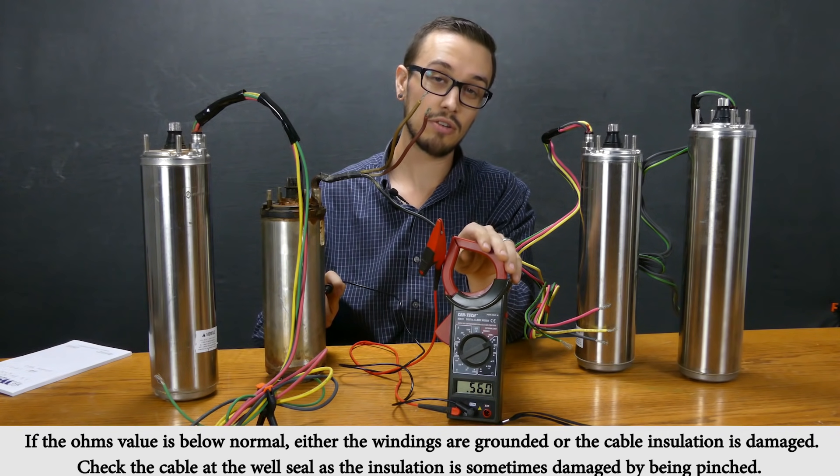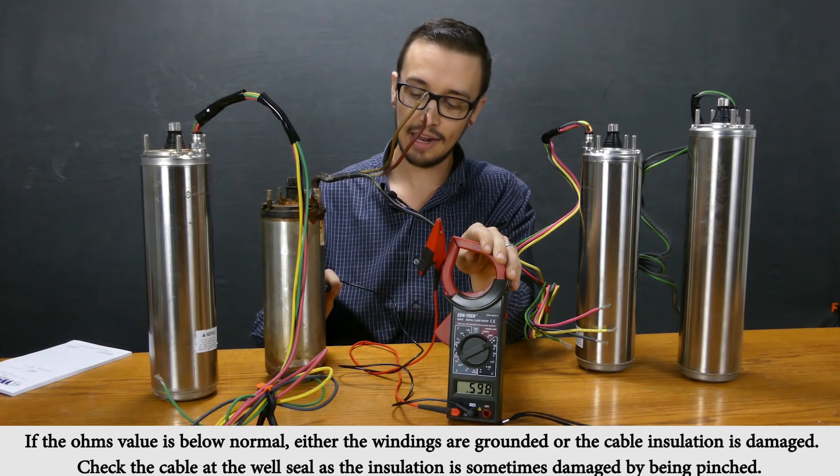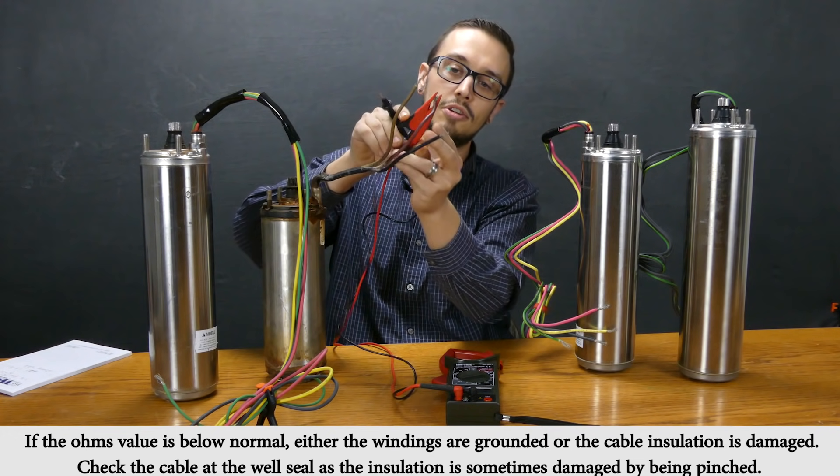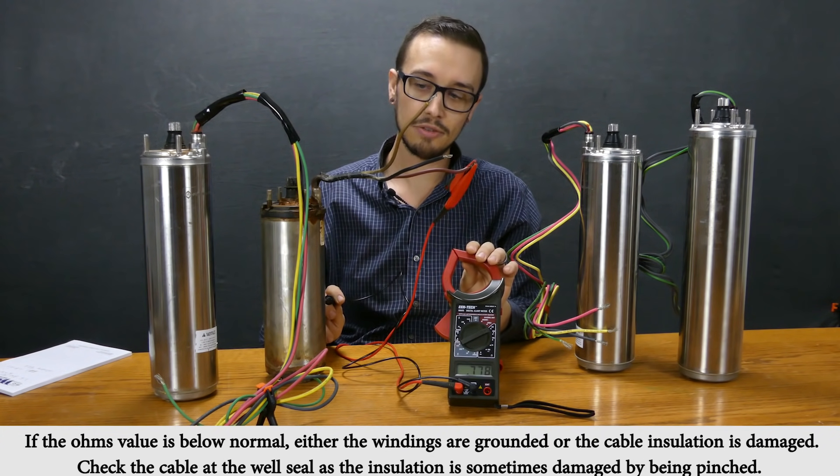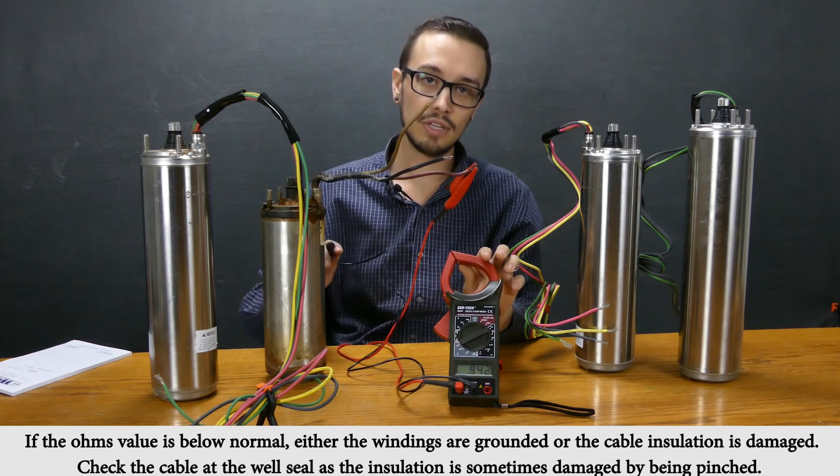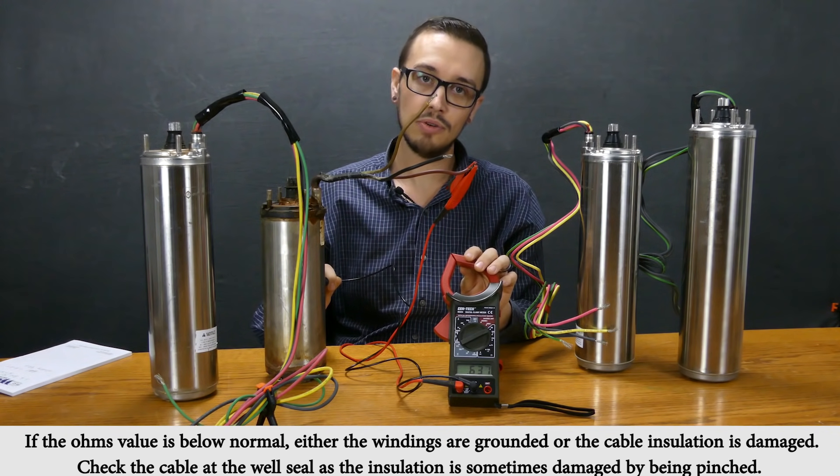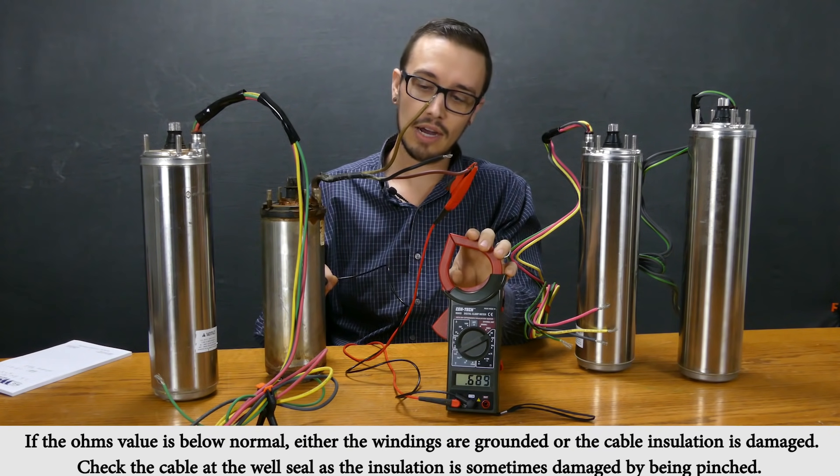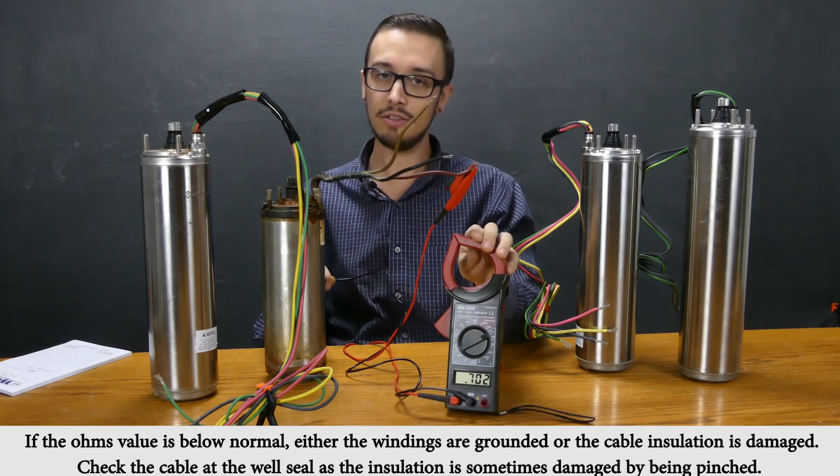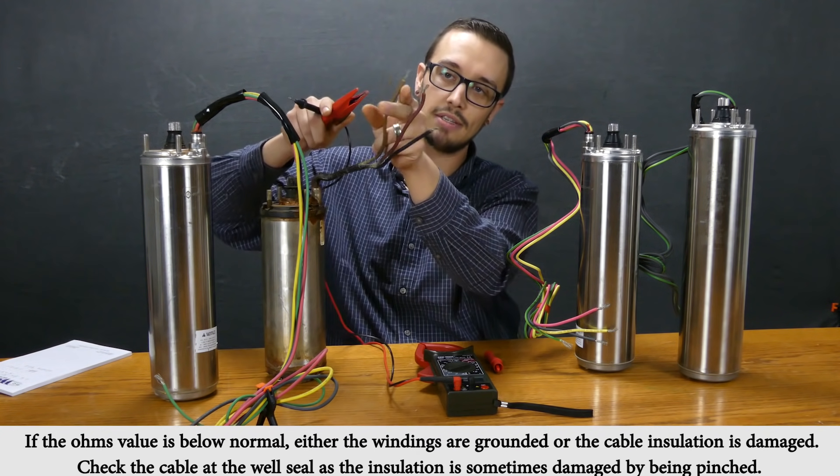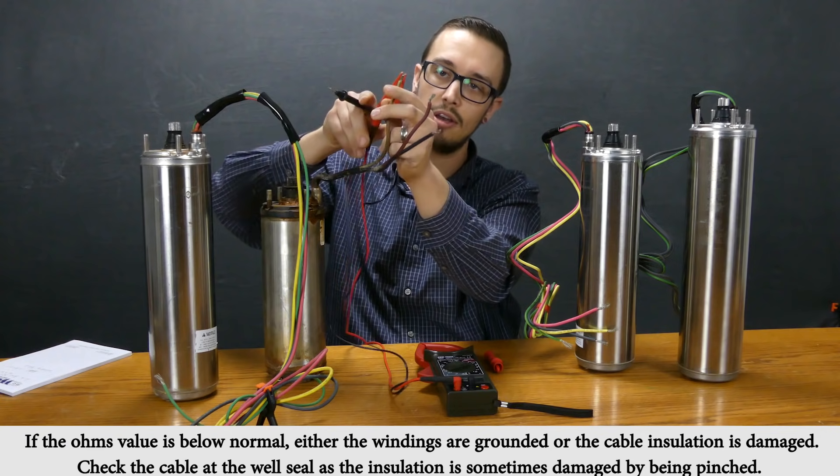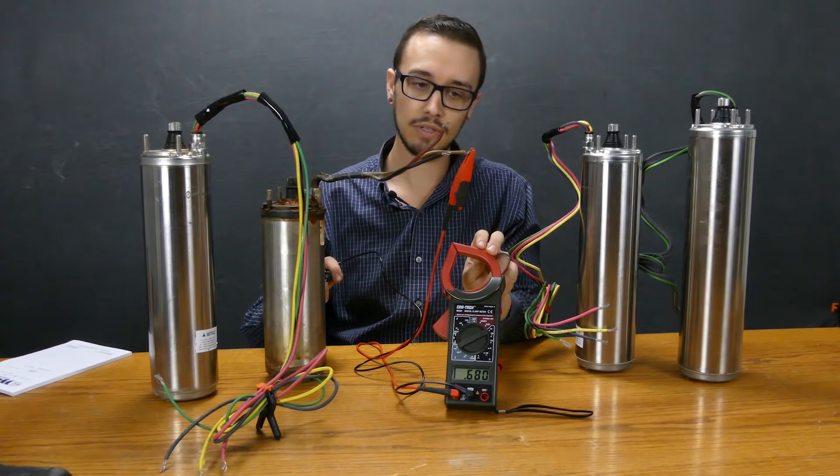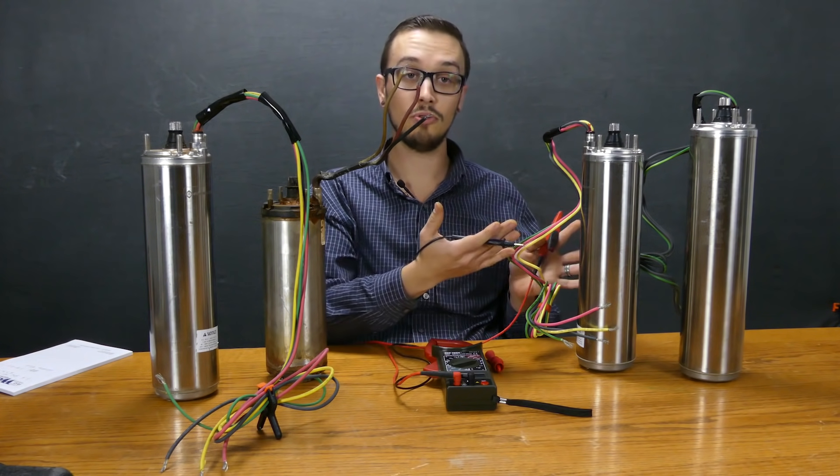That's indicating that we've got a short to ground. You can see that we're no longer in that high reading anymore. That's going to generally be the case on all of the different ones that you test because internally this is all connected. Without getting too in detail on how that works, they're all connected. So once you have a short to ground you should be able to read it essentially on all of the leads in most cases, but not necessarily every case. But in this case we can see it on all three different ones.